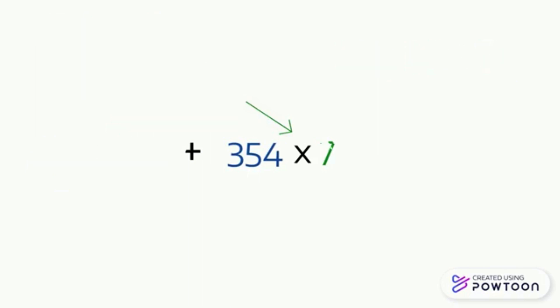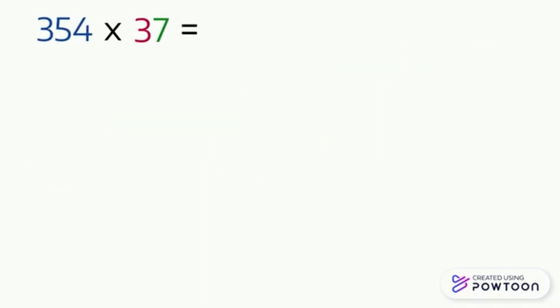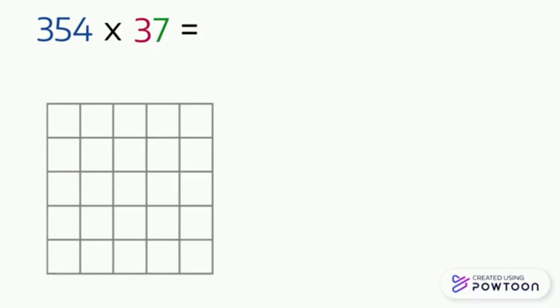To find the result of this multiplication problem we are going to learn how to set it up in columns. First of all, think about using paper with large squares to place each digit in a square — it helps you to organize your calculation. To start, we will write 354 at the top, then place the number 37 below it. Since it is 3 tens and 7 ones, we must put the 7 just below the 4 in the ones place column, and the 3 below the 5 in the tens place column.